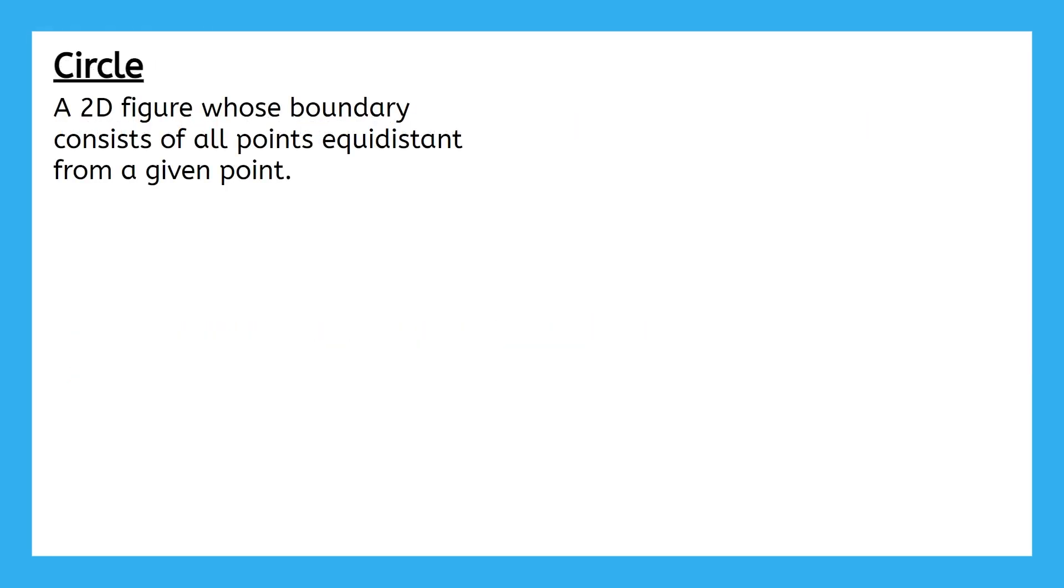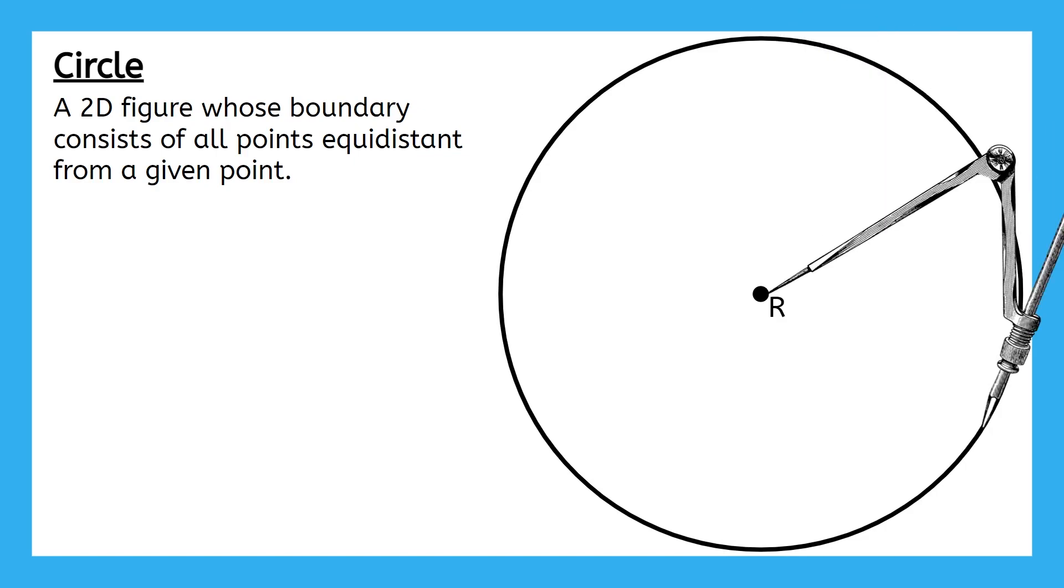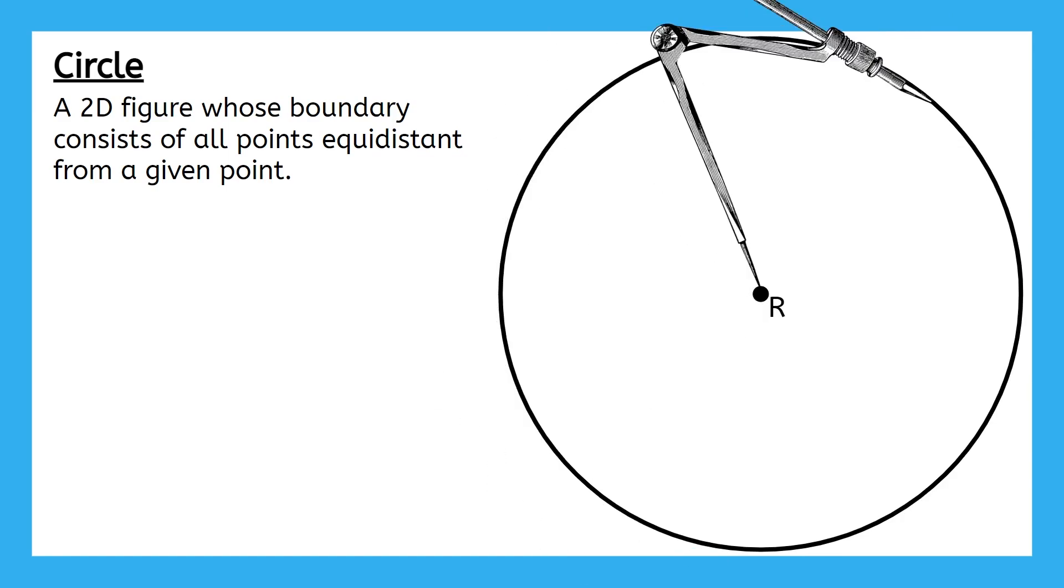Let's begin our vocabulary lesson with the shape that's responsible for this entire unit, the circle. A circle is a two-dimensional figure whose boundary consists of all points that are equidistant from a given point. Here's a given point, point R, and here is a circle that has point R as its center. We can use a compass to verify that all the points on the circle are in fact the same distance from the center by keeping the compass setting the same and making an entire rotation along the circle.